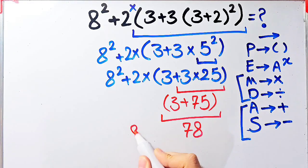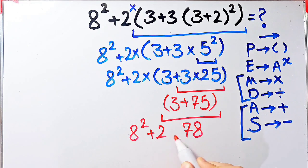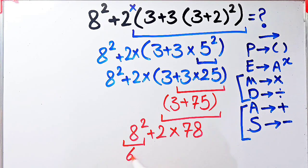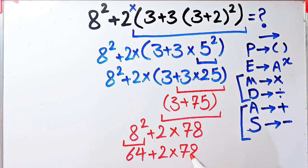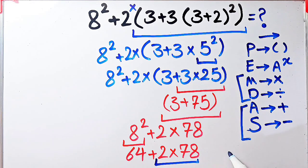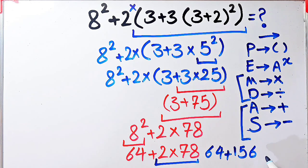Now we have 8 to the power of 2, plus 2 times 78. We have exponent, addition, and multiplication. First we simplify the exponent: 8 to the power of 2 equals 64. Now we have 64 plus 2 times 78. Multiplication has higher priority than addition, so we do 2 times 78 equals 156. Now we have 64 plus 156. The final answer of this question equals 220.